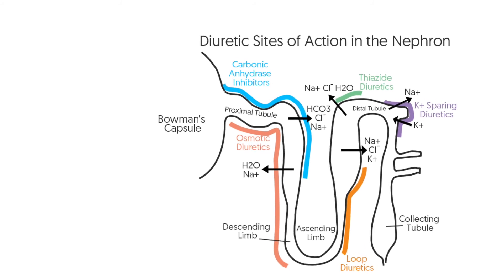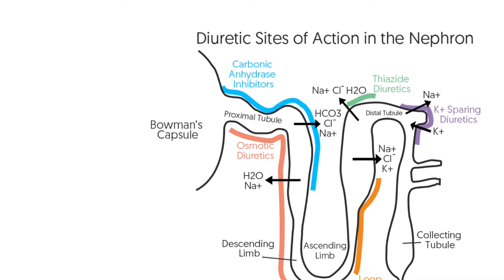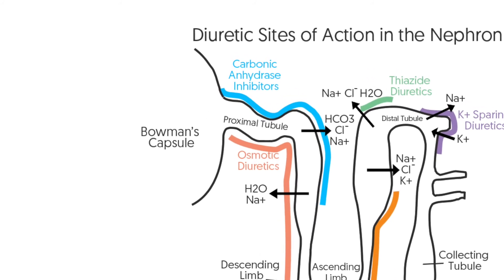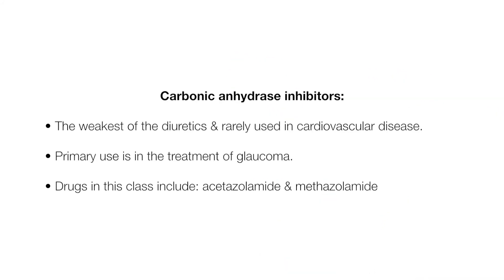Carbonic anhydrase inhibitors are the weakest of the diuretics and are rarely used in cardiovascular disease. Their primary use is in the treatment of glaucoma. Drugs in this class include acetazolamide and methazolamide.